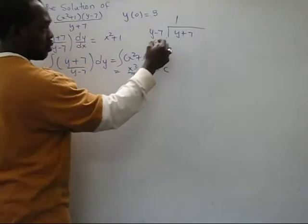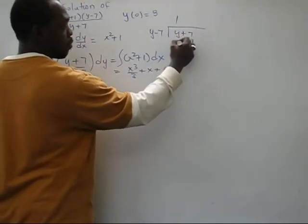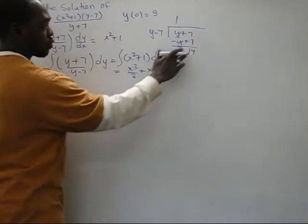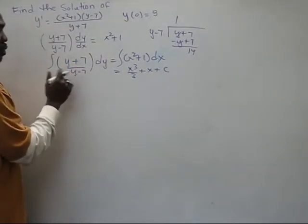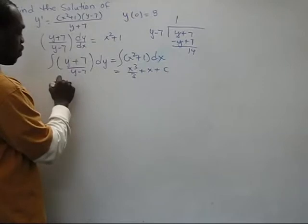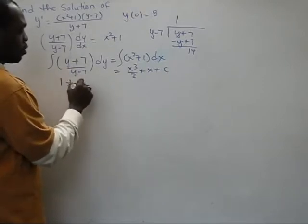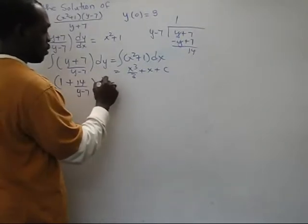It's 1 plus 14 over Y minus 7. And this one is very easy now to integrate.